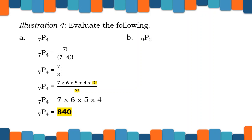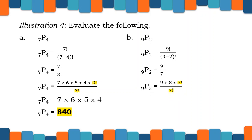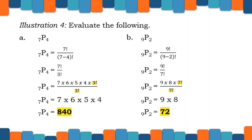Letter B: 9P2. We have 9 factorial all over the quantity (9 minus 2) factorial, and 9 factorial all over 7 factorial. We need to expand 9 factorial from our numerator: 9 times 8 times 7 factorial, all over 7 factorial. The 7 factorials cancel out, so we have 9 times 8, which is equal to 72.